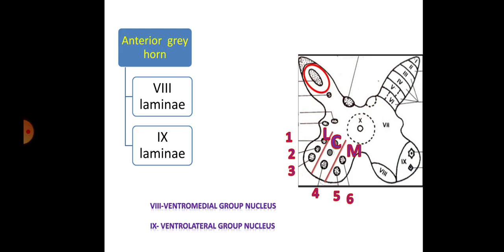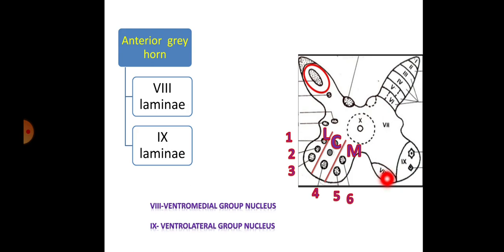This is about the nuclear theory. Coming to the laminar theory, the anterior grey horn is divided into only two laminae: the eighth lamina and the ninth lamina. Comparing the two theories, the eighth lamina is concerned with the medial group of the nucleus and the ninth lamina is concerned with the lateral group and the central group of the nucleus.